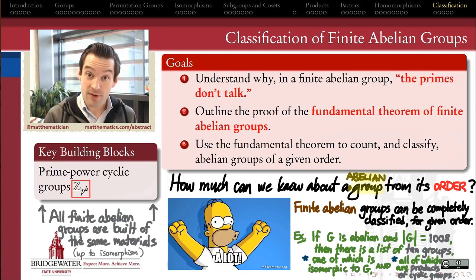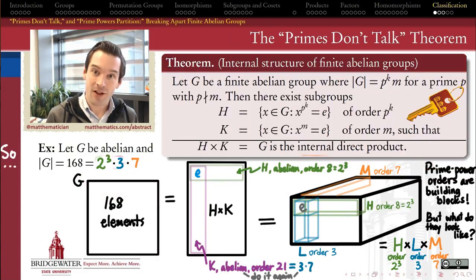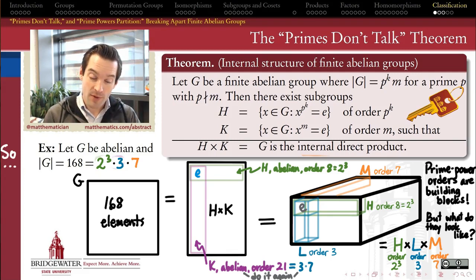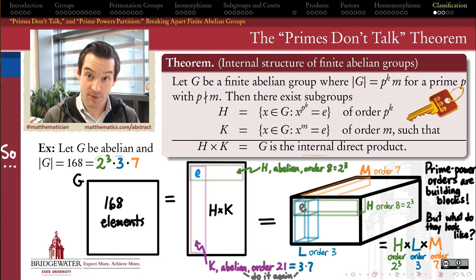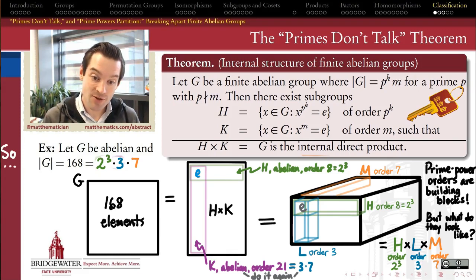Our two key pieces of evidence so far — and they're all that we need — are, first of all, the Primes Don't Talk theorem. It tells us every finite abelian group can be decomposed as a direct product of its subgroups, where those subgroups have orders that are powers of primes. So in our example, every group of order 168 is a direct product of a group of order 8, a group of order 3, and a group of order 7, because that's the prime power factorization, and the prime powers don't talk to one another.